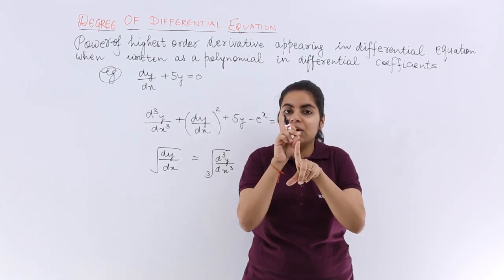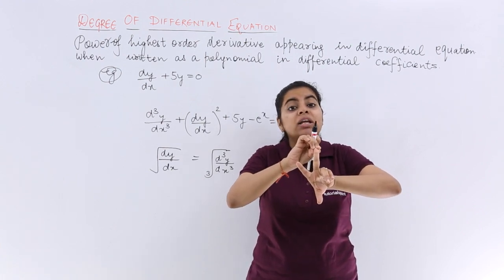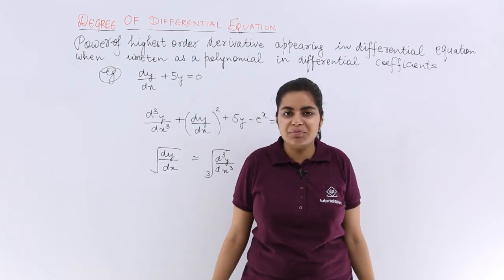You need to follow two steps. The first is find out the highest order derivative, that means the order. And the second step would be find out the power of that highest order derivative. That will give you the degree.